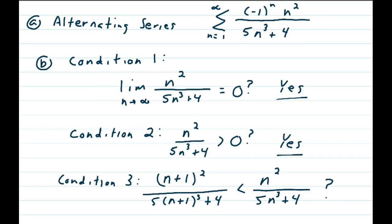So looking at the alternating series, summation n equals 1 to infinity of negative 1 to the nth. You could also have negative 1 to the n plus 1. It doesn't matter. We're just trying to determine whether the alternating series converges or diverges, of n squared over 5n cubed plus 4.